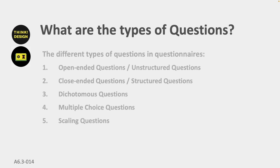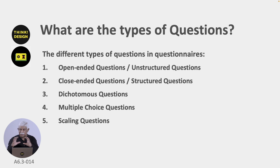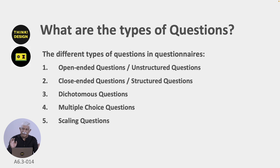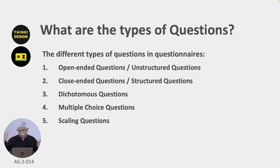Let us look at the types of questions. The first is an open-ended question — it is unstructured and very good for taking suggestions, feedback, and opinions. The second is close-ended or structured questions, where you give users a few choices to select from. Third are dichotomous questions, which have two answers — typically yes or no. Fourth are multiple choice questions, where you have many choices and can choose more than one. Fifth is a scaling question, where you ask respondents to rate between one figure and another — for example, from 'I very much like it' to 'I do not like it at all.'